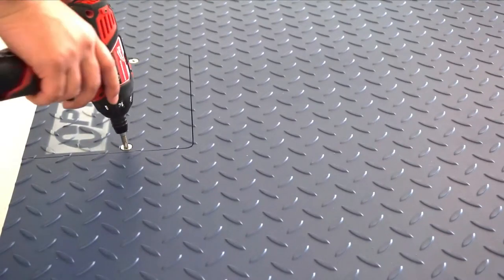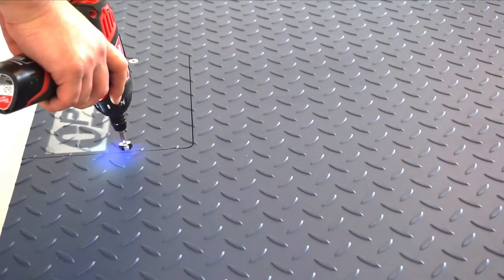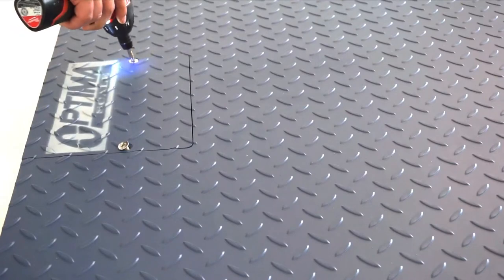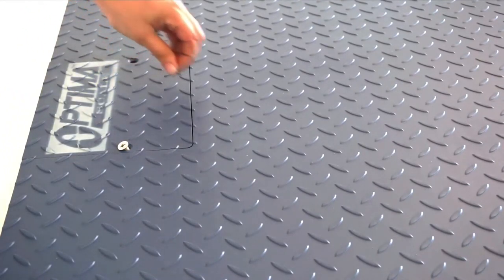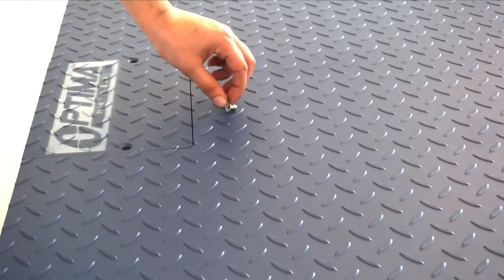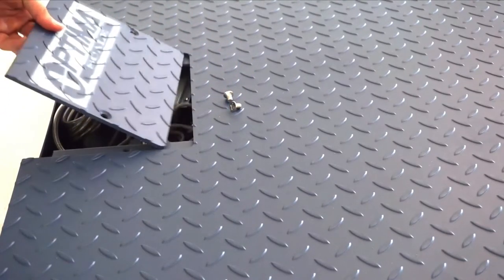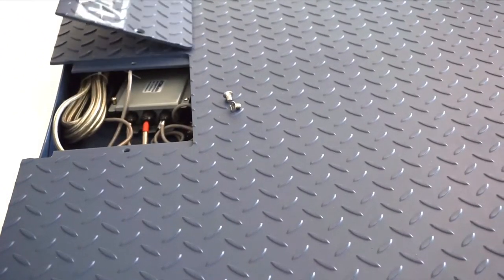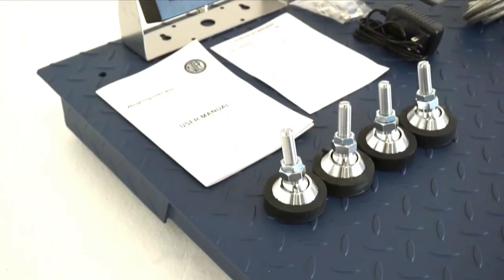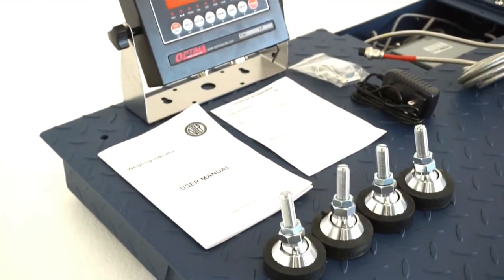Upon receiving your NTEP Certified Floor Scale, remove the access plate to locate all needed components. Each scale will come with our OP900A-01 indicator, charging adapter, 4 screw-in feet, owner's manual, calibration certificate, and 20-foot stainless steel braided home run cable.